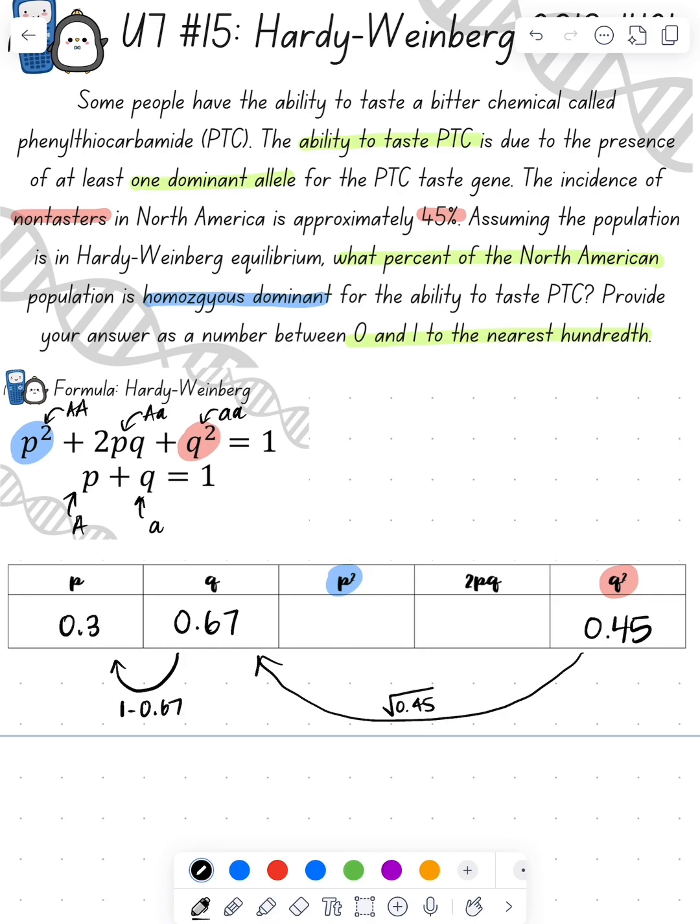Then p plus q equals 1. So 1 minus 0.67 gives us our p, which is 0.33. We square that to find our p² value is 0.1089. And then our 2pq would just be 2 times p times q, which is 0.44.